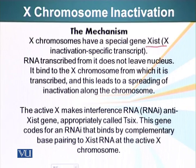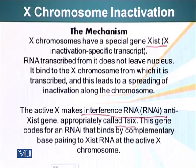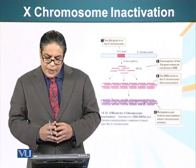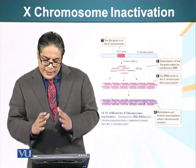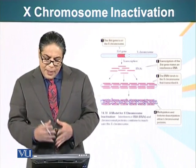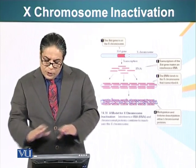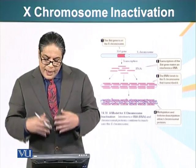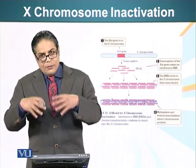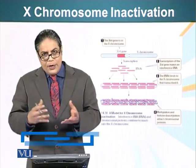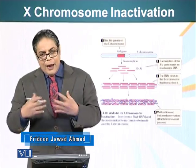The other active X chromosome makes interference RNA, or RNAi, which is exactly complementary to the XIST RNA. This is appropriately called TSIX RNA, and this RNA basically prevents the active X chromosome from becoming inactive. We can see it on the screen: the inactive X chromosome is making XIST, while the active X chromosome transcribes TSIX RNAi, which coats the X chromosome and makes it a target for methylation. When a methyl group is added to the cytosines of the DNA, it results in making the DNA unavailable for transcription.